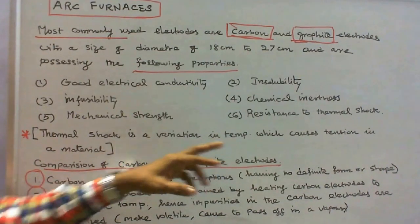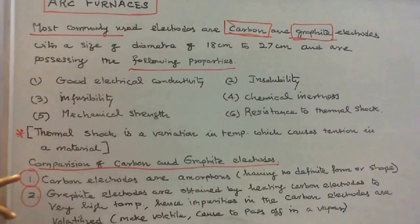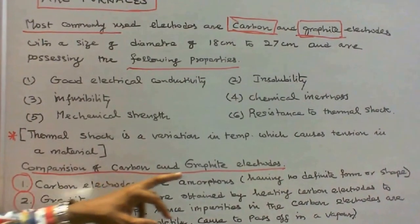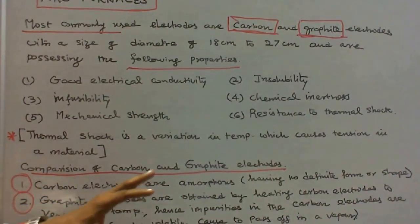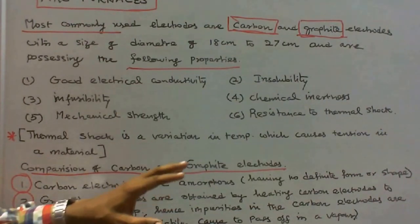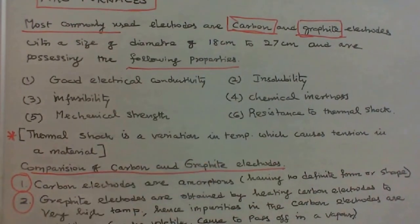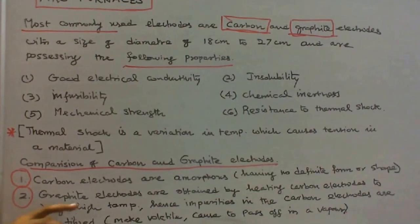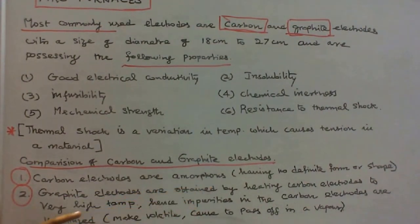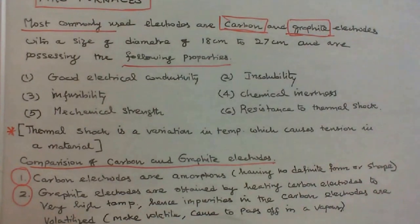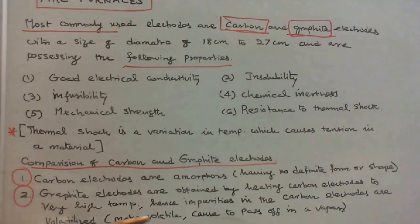Now we'll see the comparison of carbon and graphite electrode. Number one: carbon electrodes are amorphous, that means no definite form or shape. Number two: graphite electrodes are obtained by heating carbon electrodes to a very high temperature, hence impurities in the carbon electrodes are volatilized. Volatilized means to pass off in a vapor.